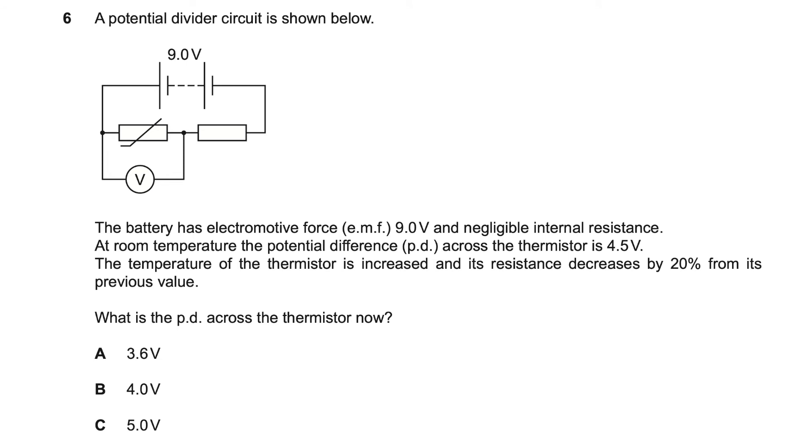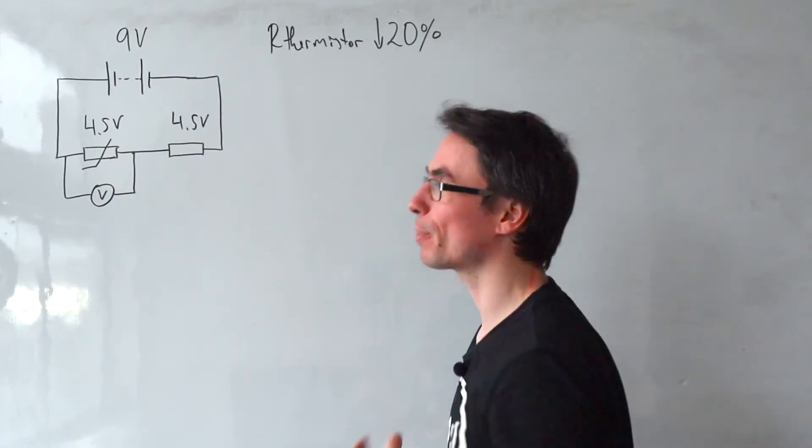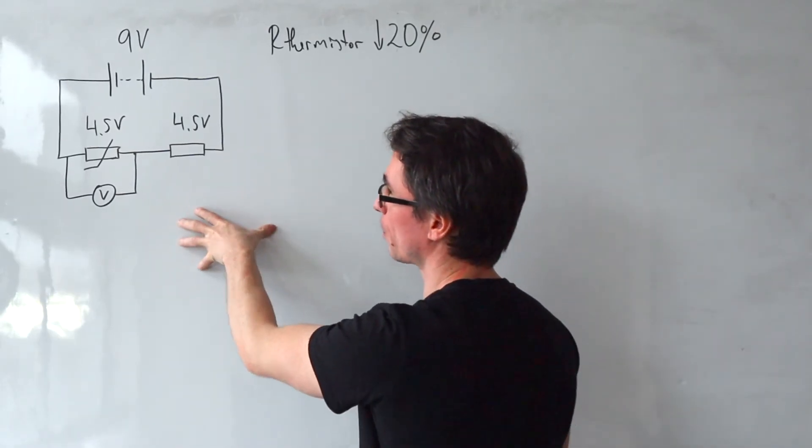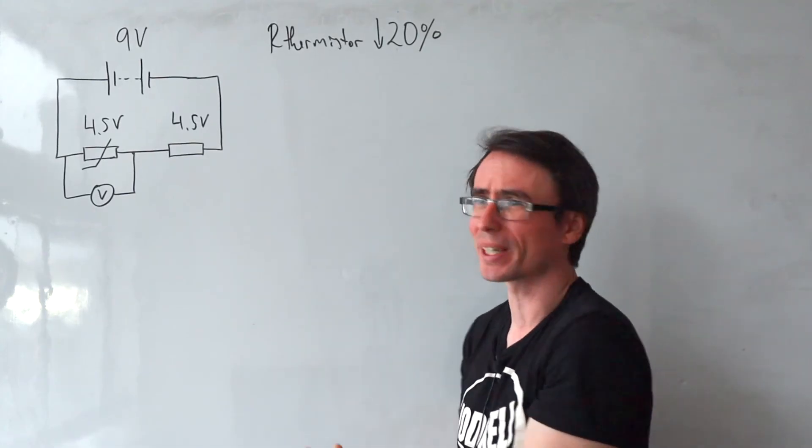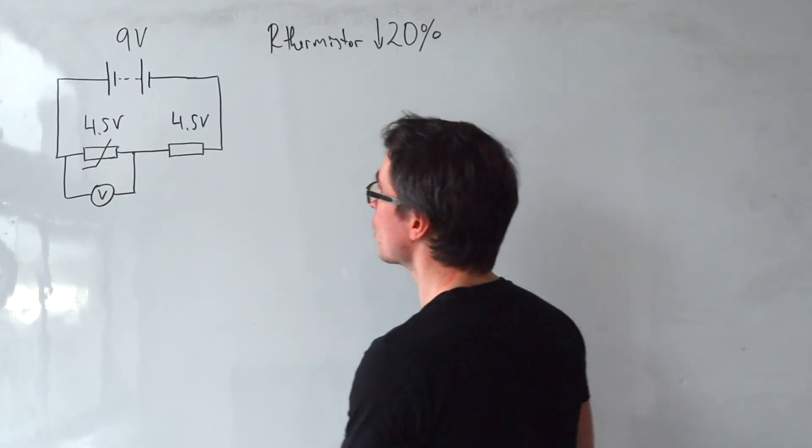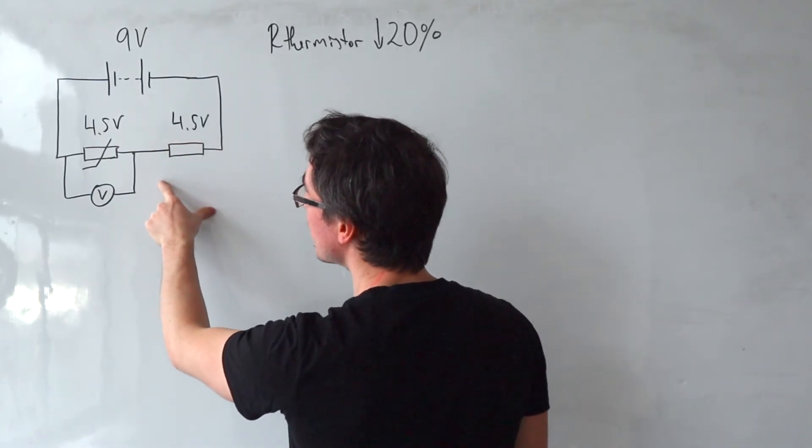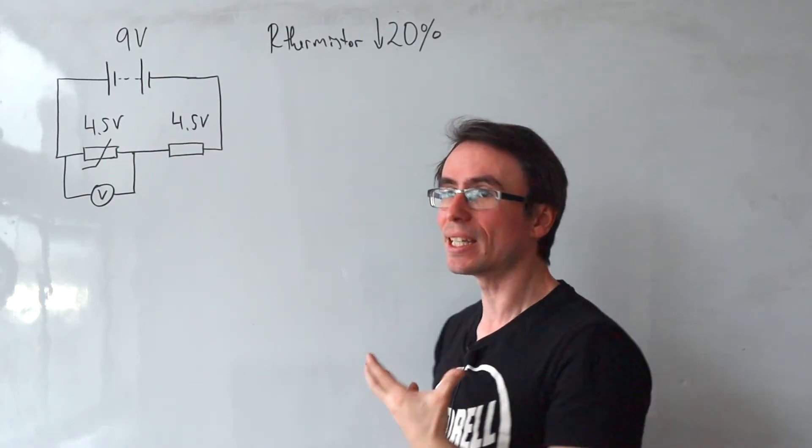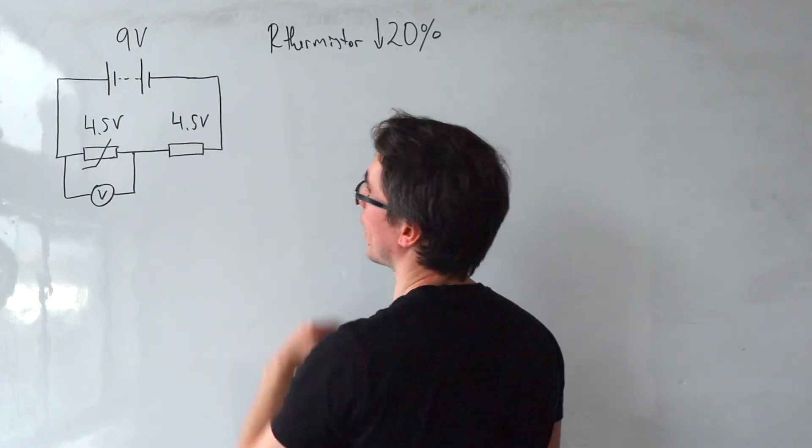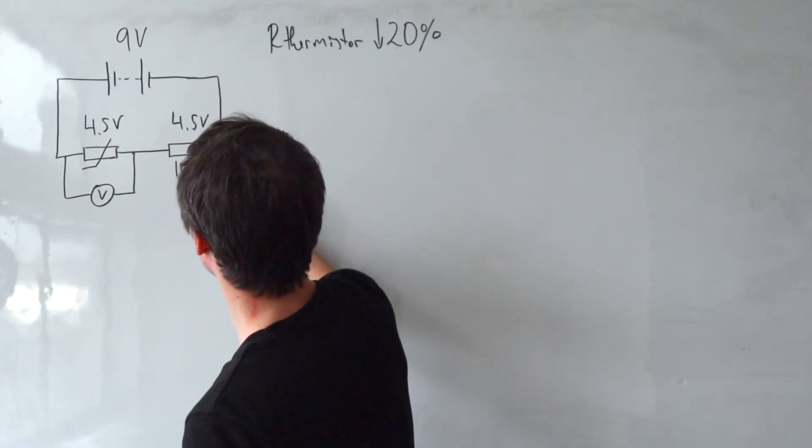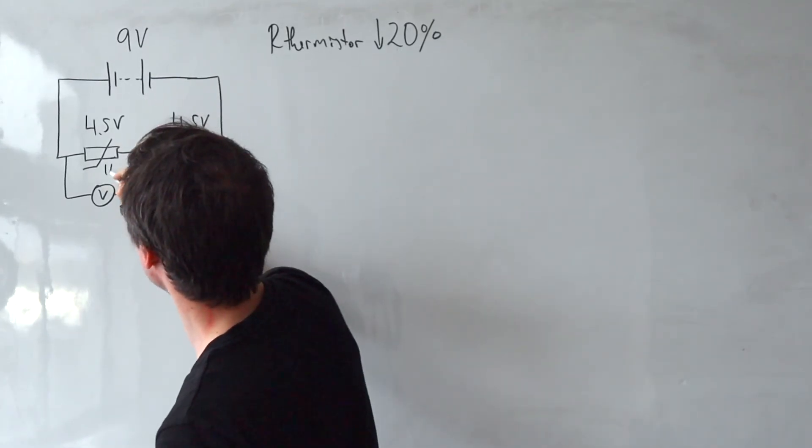This next question on potential divider circuits caused quite a few problems. It also highlights a really important technique. Have a go. Now, you can solve this question using algebra, but it's just a lot more time consuming. The easiest way to tackle these types of problems, when you don't actually know the current and the resistance, would be to just invent some other values. So, because we know that initially the voltage is four and a half, that means that the voltage is equally split. At the initial temperature, they need to have equal resistance.